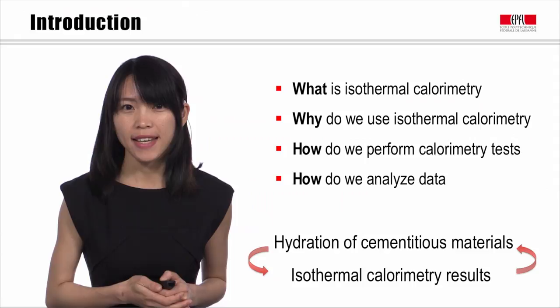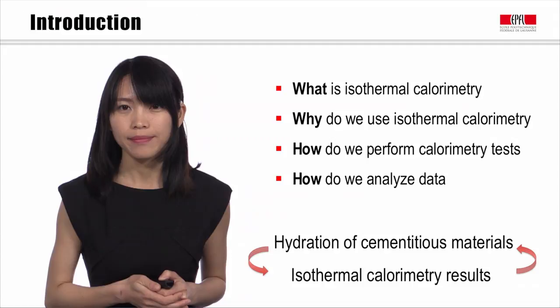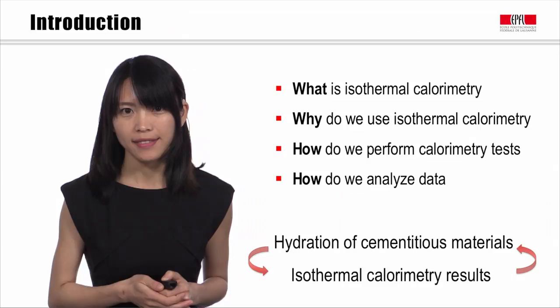Two W's are what is isothermal calorimetry and why do we use it in the cement field. Two H's represent how do we perform a calorimetry test and how should we treat the data in order to get the information we want.